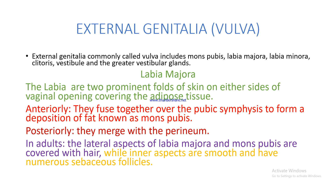Labia majora: these are two prominent folds of skin on either side of the vaginal opening, covering adipose tissue. Anteriorly, they fuse together over the pubic symphysis to form a deposition of fat known as the mons pubis. Posteriorly, they merge with the perineum. In adults, the lateral aspects of the labia majora and mons pubis are covered with hair, while the inner aspects are smooth and have numerous sebaceous glands.